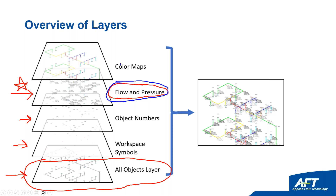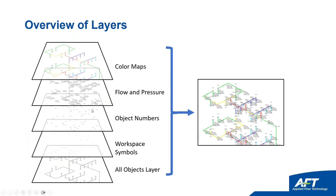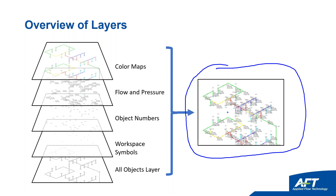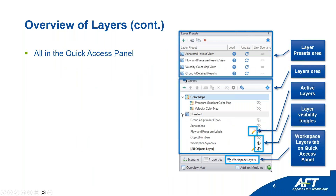Everything is customizable. You don't have to have symbols, object numbers, or flow and pressure each as separate layers — they could all be one layer. Color maps color the pipes based on the values of a parameter; for example, high flow rates get green and lower flow rates get blue, with customizable thresholds. When you make layers, you can show them all together or turn some off, like hiding the color map or symbols — it's a quick way to show only what you want.